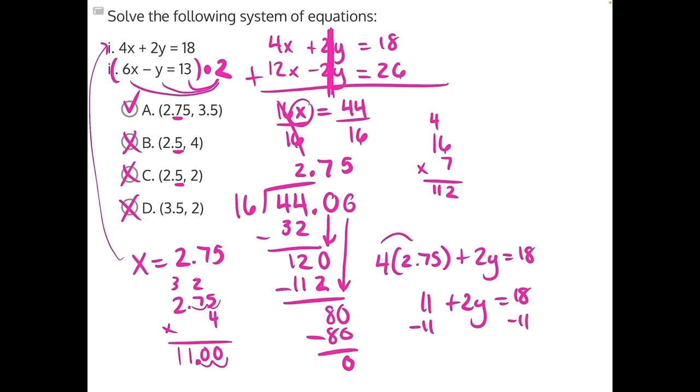We subtract 11 from both sides. These cancel, giving us 2y is equal to 18 minus 11 is 7. And when we divide 7 by 2, half of 7 is 3.5. Again, making answer choice A our correct answer. Now I'm going to erase some of this and go back and show you how to use substitution to solve.